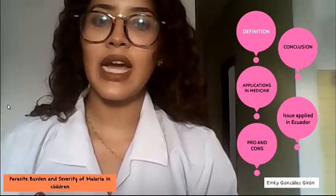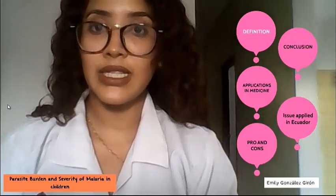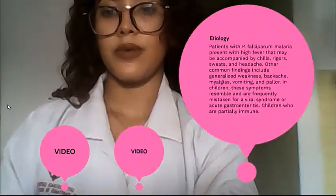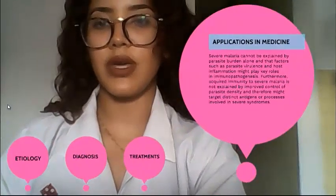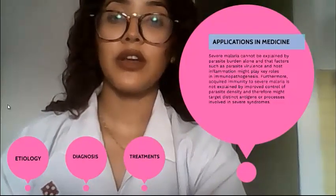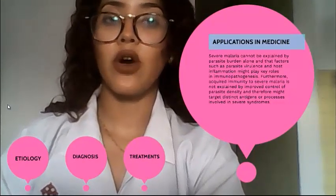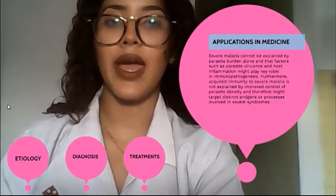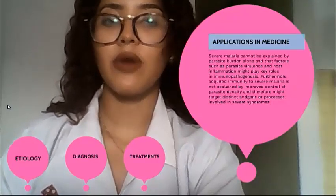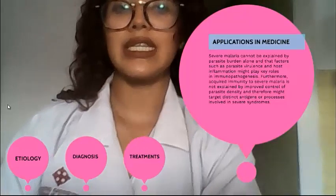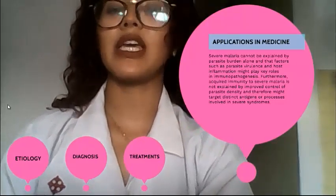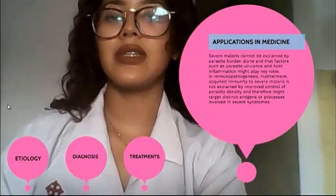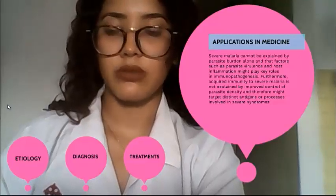Left untreated, falciparum malaria can progress to severe illness and complications. Severity of malaria cannot be explained by parasite burden alone; virulency and host inflammation might play key roles in immunopathogenesis. Furthermore, acquired immunity to severe malaria is explained by improved control of parasite density, and therefore might target disease progression in both severe syndromes.